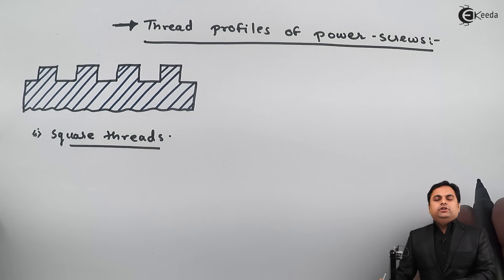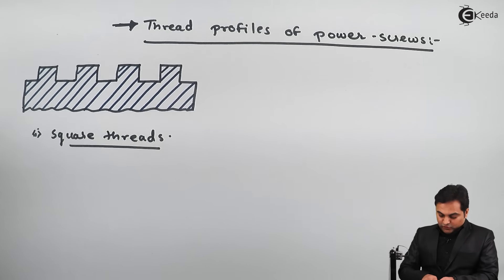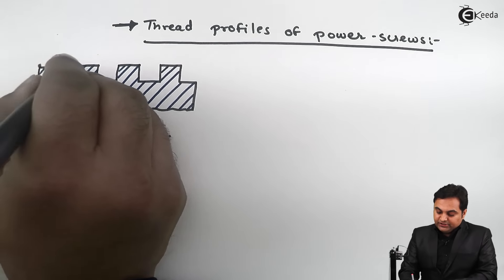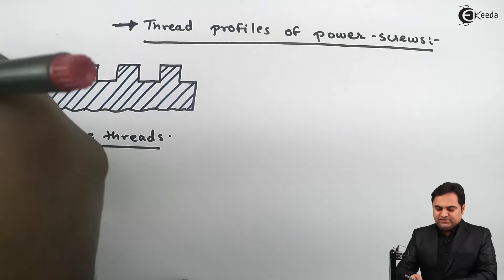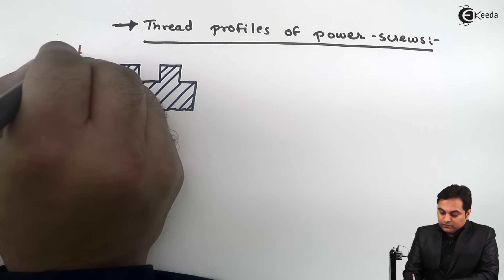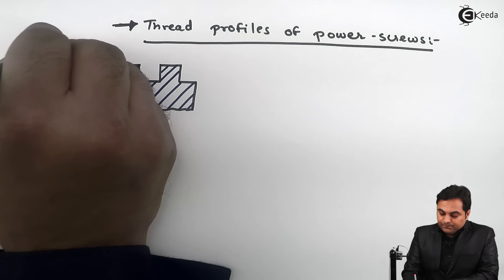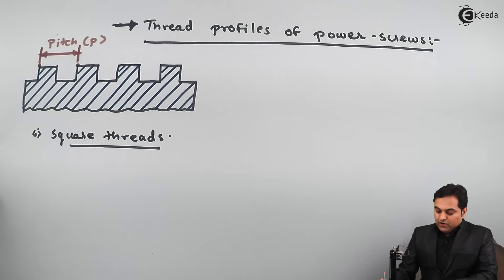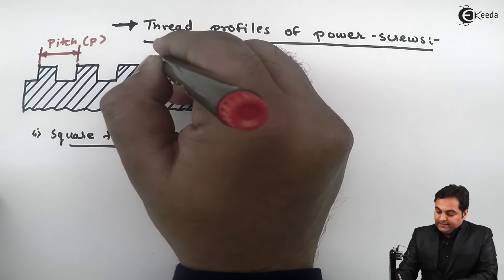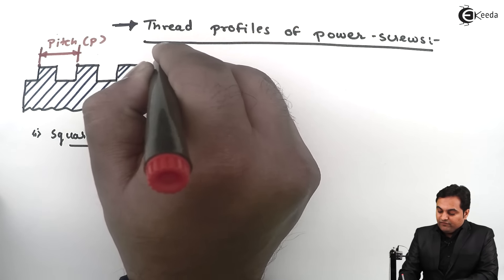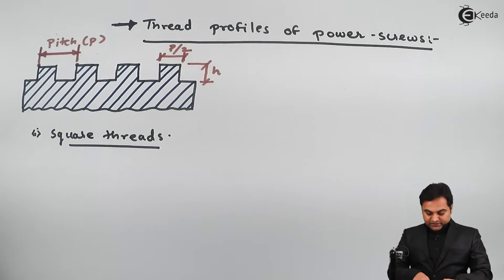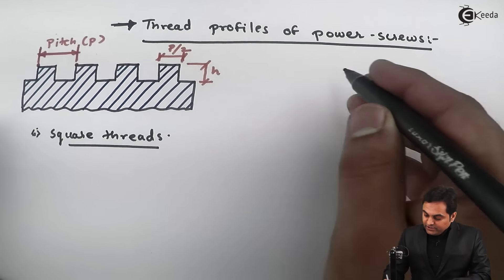Square threads are mostly used for power transmission. If I take any point on a thread and along its axis measure the distance to the same point on the next thread, that distance is called the pitch, denoted by small p. The height of the thread is denoted by h, and the top surface of the thread is taken as half of pitch, that is pitch divided by 2.